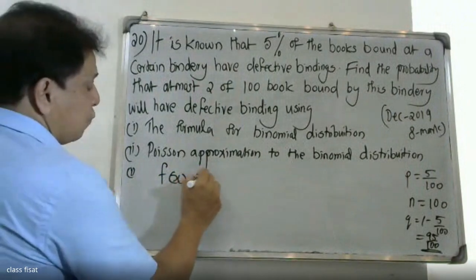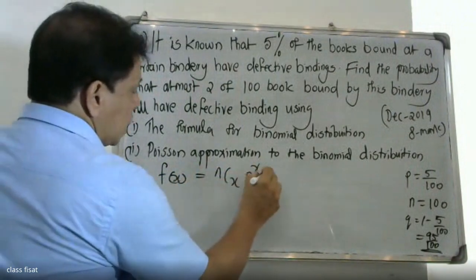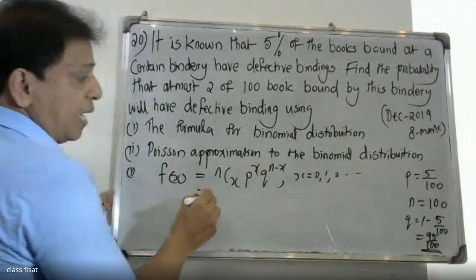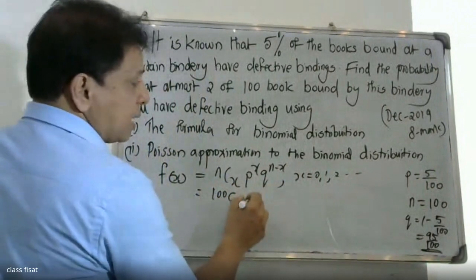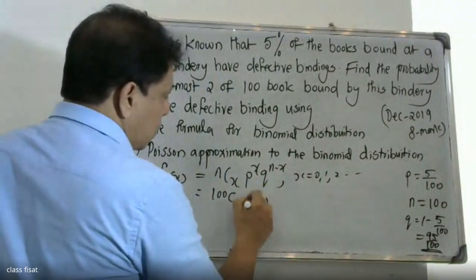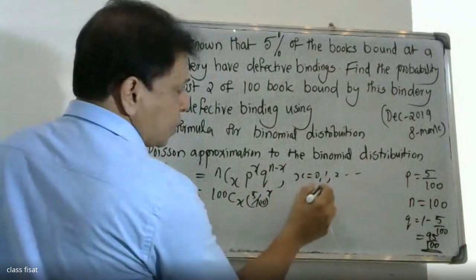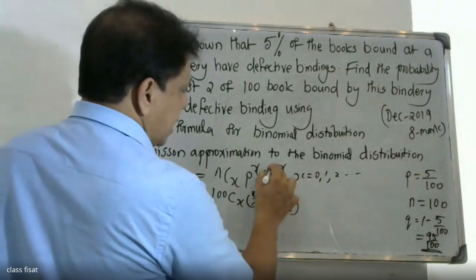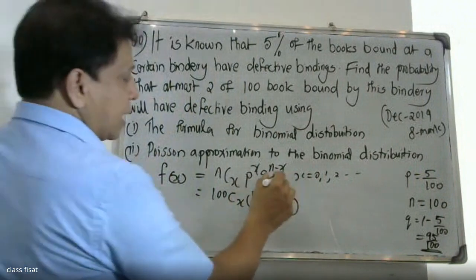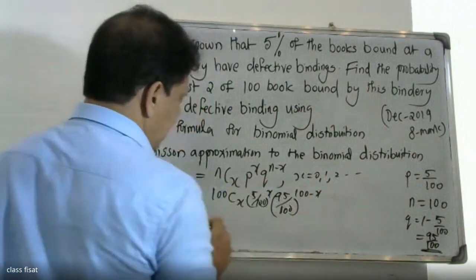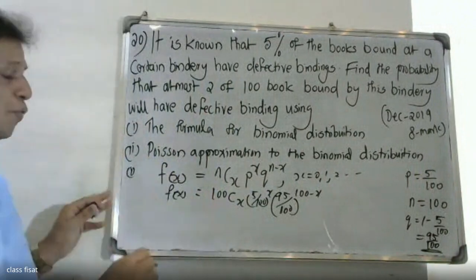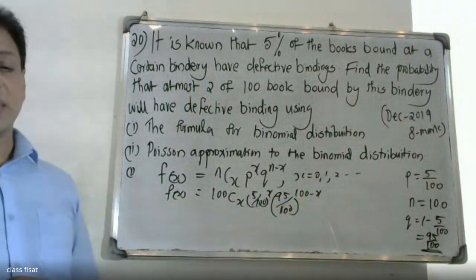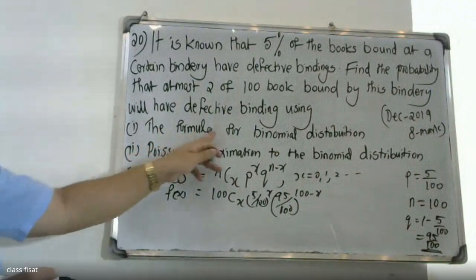The binomial distribution function is: P(X = x) equals nCx times p raised to x times q raised to n minus x, where x can be 0, 1, 2, and so on. Here n equals 100, p equals 5 by 100, and q equals 95 by 100, raised to 100 minus x.